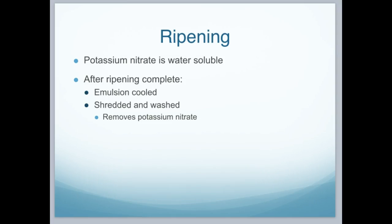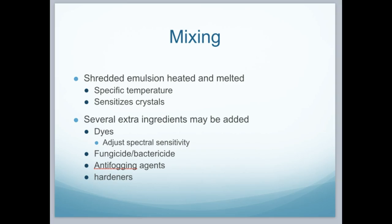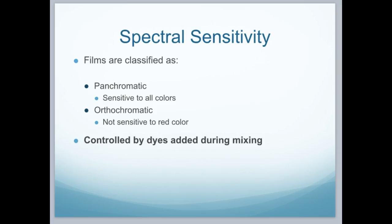Potassium nitrate is water soluble. After ripening is complete, the emulsion is cooled, shredded, and washed, removing the potassium nitrate. Going into the mixing phase, the shredded emulsion is heated and melted at specific temperatures, which sensitizes the crystals. Several extra ingredients may be added: dyes which adjust the spectral sensitivity, fungicides and bactericides, anti-fogging agents and hardeners. The two classifications for spectral sensitivity in x-ray film are panchromatic, which is sensitive to all colors, and orthochromatic, which is not sensitive to the red color. All this is controlled by the dyes during the manufacturing process.